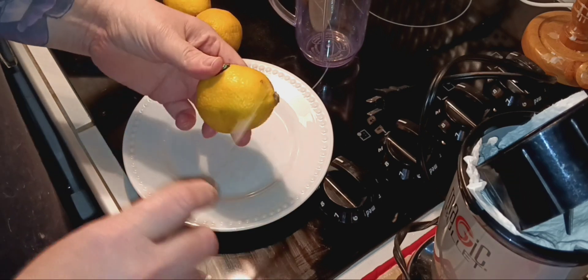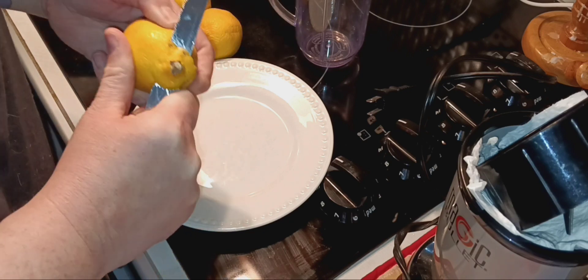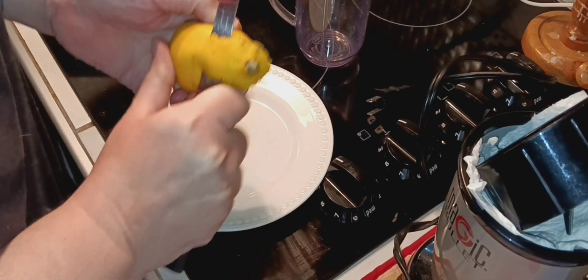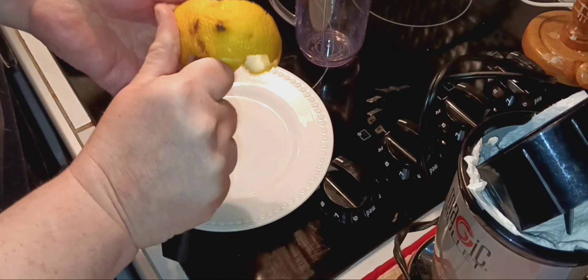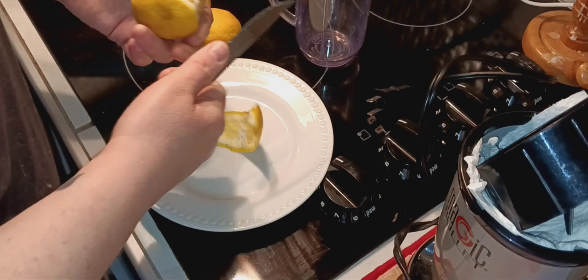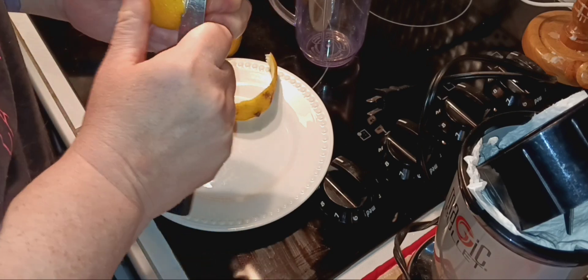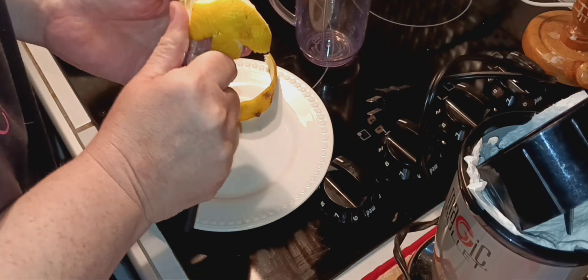She had the whole lemon and not the peel though. So I'm going to try to see if I can take off the skin of the lemon. These immunity bombs, you put them in your ice cube tray and you put them in the freezer. She said it lasts for four months in the freezer. So they're like little cubes.